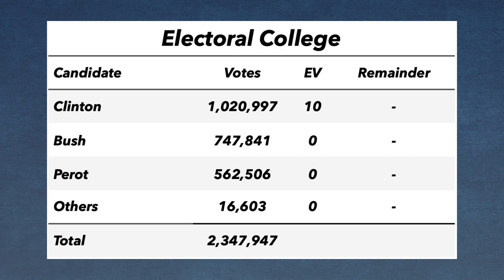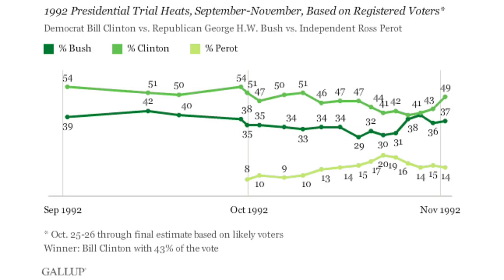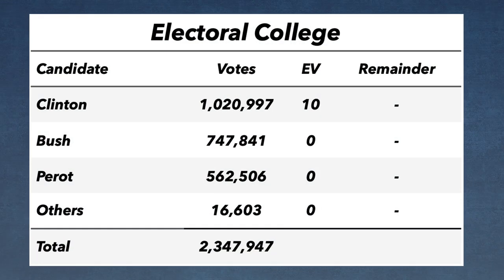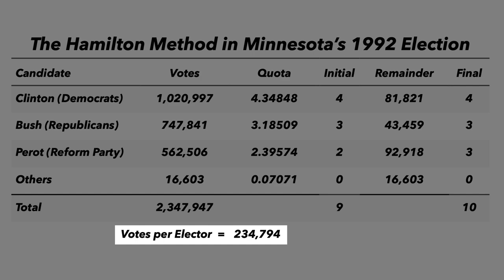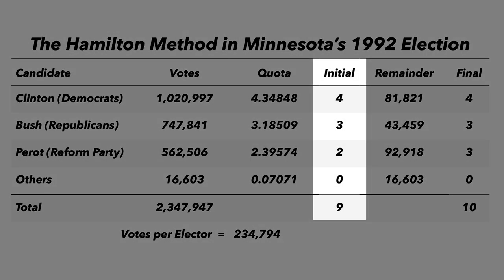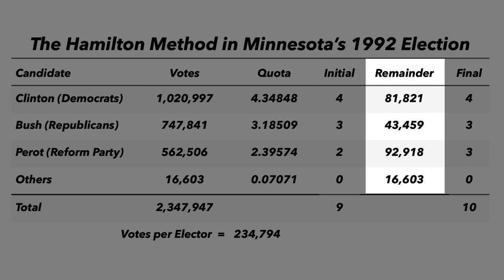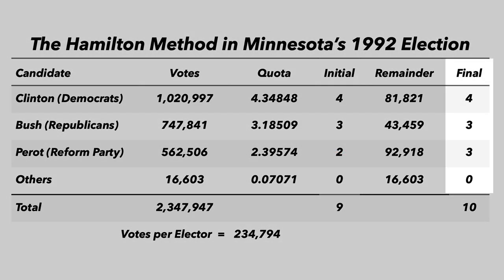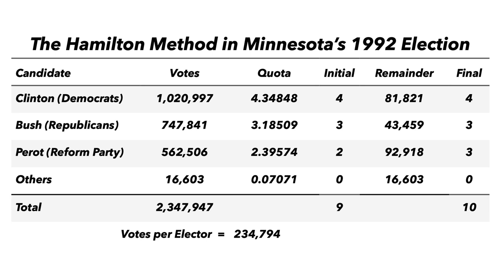In that election in Minnesota, there were about 2.3 million votes. Dividing this number by Minnesota's 10 electoral votes gives us 234,794 votes per elector. The three candidates were Bill Clinton of the Democratic Party, George H.W. Bush of the Republican Party, and Ross Perot of the Reform Party. Each party's vote would be divided by the vote per elector, 234,794, giving us the initial quota. With only nine electoral votes distributed so far, the final vote is awarded to the party with the highest remainder. In this particular election, the Reform Party had the highest remainder votes and is given the final electoral vote. Instead of Bill Clinton winning all ten electoral votes, four would go to the Democrats, three to the Republicans, and three to the Reform Party. The Hamilton method is much more representative of voters than using the winner-take-all method.